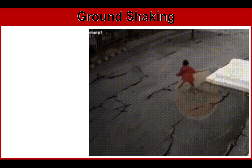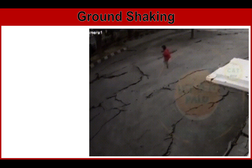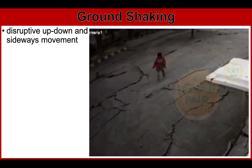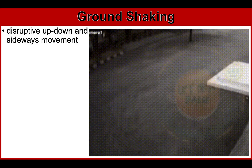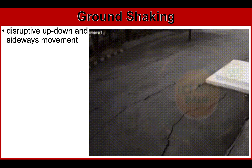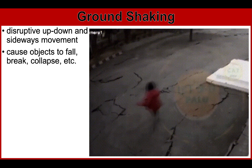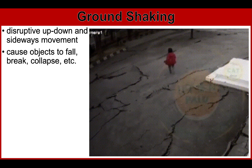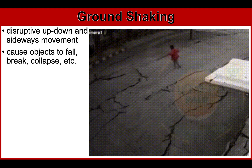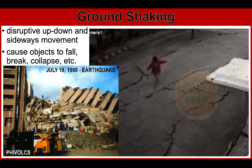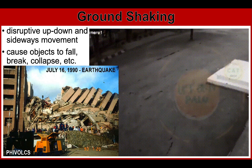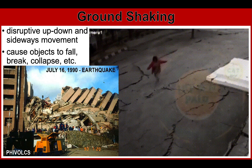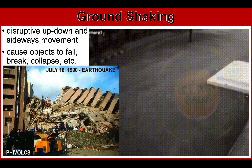The first hazard is ground shaking. Ground shaking is a disruptive up-down and sideways movement or motion experienced during an earthquake. Strong ground shaking can cause objects to fall, break windows, and collapse structures, among others. For example, the collapse of Hyatt Hotel in Baguio City after the July 16, 1990 Luzon earthquake.